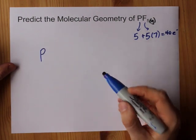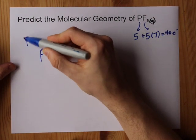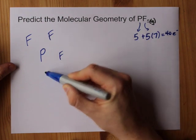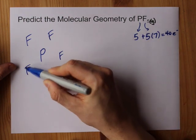I like putting my central atom in the center, and then I surround it with my outer atoms. That's five fluorines: one, two, three, four, five.